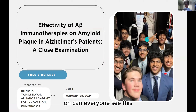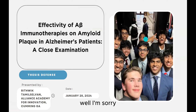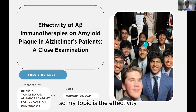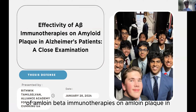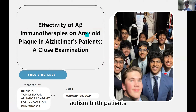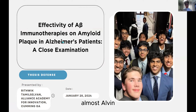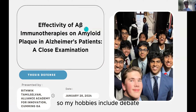My topic is the effectivity of amyloid beta immunotherapies on amyloid plaque in Alzheimer's patients. My name is Rithvik Tomo Sullivan; I go to Alliance Academy in Cumming, Georgia.